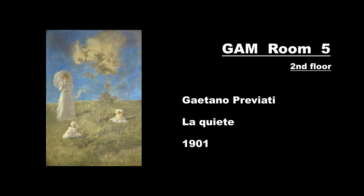Gaetano Previati, 1891. Previati, coming from the Scapigliatura Milanese, moves toward Divisionism. The painting shows a scene in plain air, which is precisely the point of contact between these artistic currents. The scene he represents here is a serene outdoor image, with drifting points of white — the clothing of the protagonist — distributed evenly across the lawn.